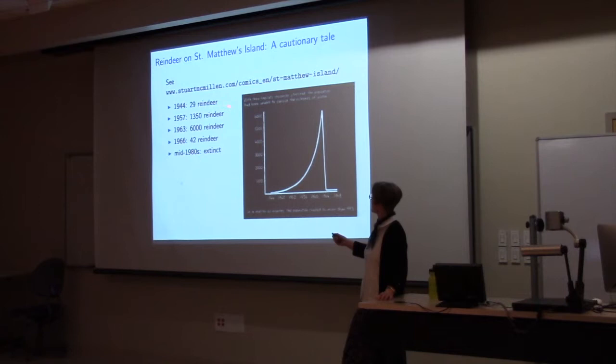So the reindeer, unsurprisingly, grew rather rapidly. We decommissioned that station, and humans really didn't visit again until 1957. In 1957, there were 1,350 reindeer on St. Matthew's Island, and they were fat and healthy, and they were doing really well. The humans went away again, and didn't return until 1963. In 1963, there were 6,000 reindeer on the island, and at this point, the reindeer were not quite so fat and happy. They were looking a little scraggly and a little bit thin.